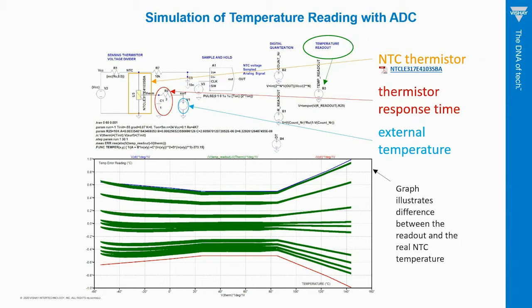The graph represents the difference between the readout and the real temperature. We see well that all the results are properly scattered within the data sheet temperature accuracy curve.